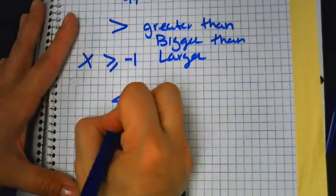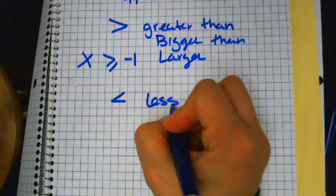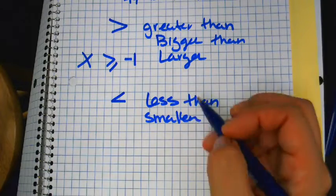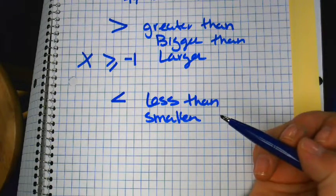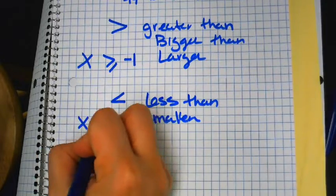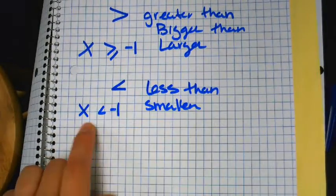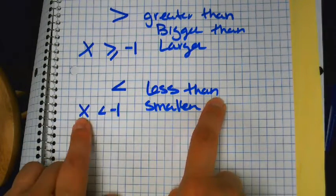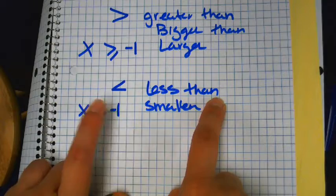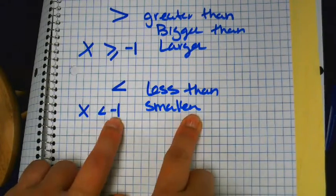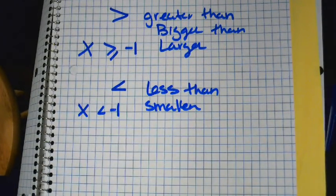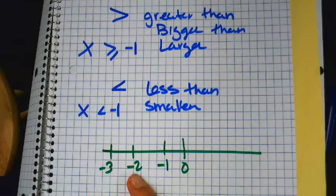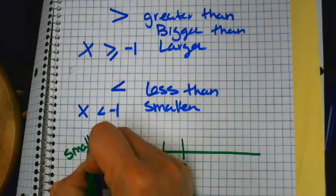If I have this symbol — less than — that means smaller. X is less than negative one. Which numbers are smaller than negative one? You have to have a really good understanding that with negative numbers, the further you go to the left, the smaller you go.